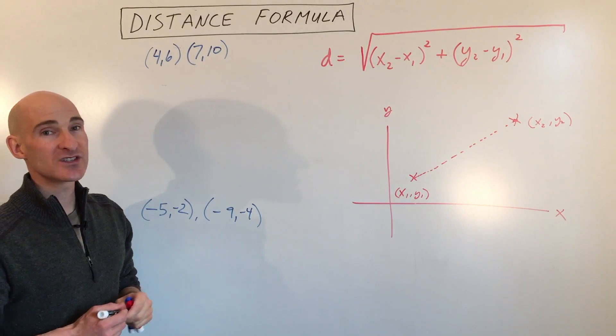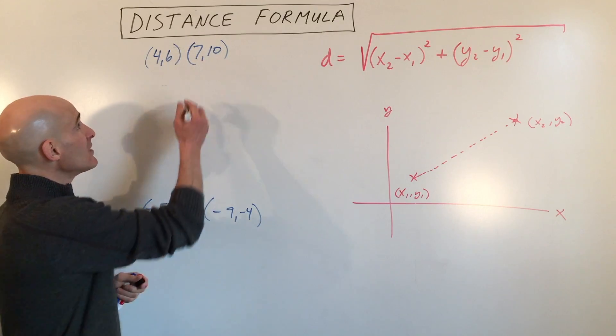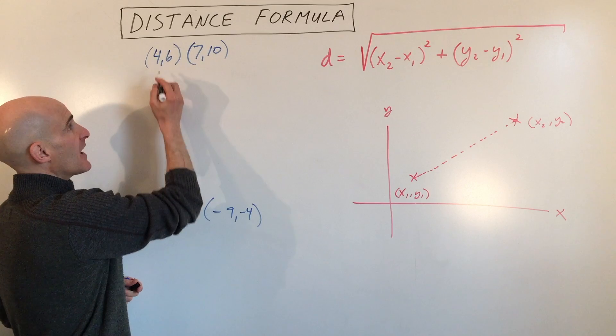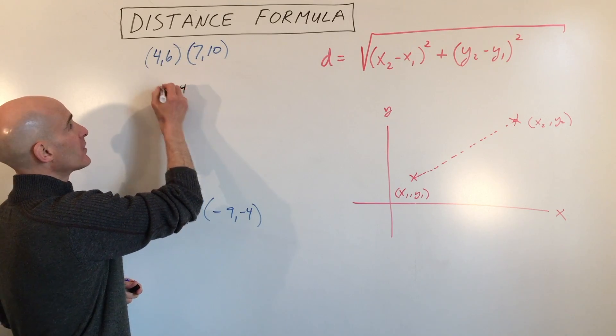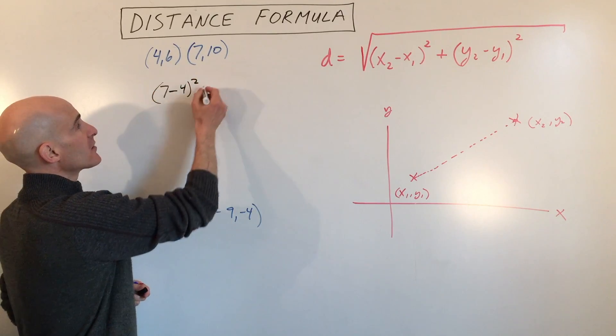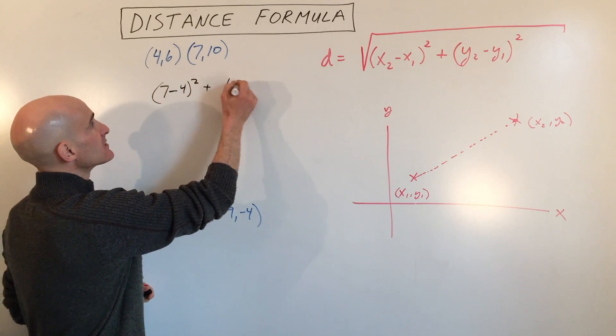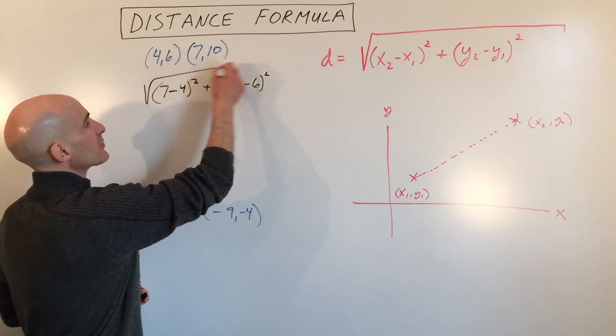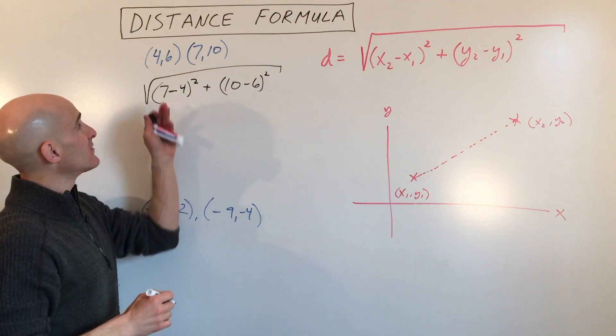So let's say, for example, we have the points 4, 6, and 7, 10. So what I'm going to do is I'm going to take x minus x, so 7 minus 4, the quantity squared, plus y minus y, 10 minus 6, the quantity squared. Add those together and take the square root, and that's going to give us the distance.